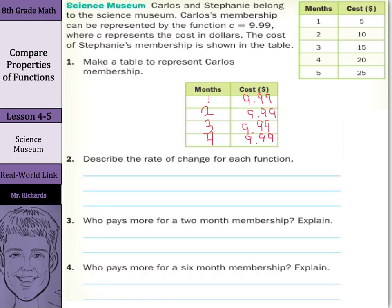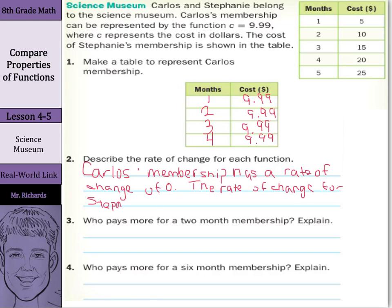So describe the rate of change for each function. Well, as we just kind of said, Carlos' membership has a rate of change of 0. The rate of change for Stephanie's membership is $5.99 a month. As you can see, from month to month, it's increasing by $5.99.